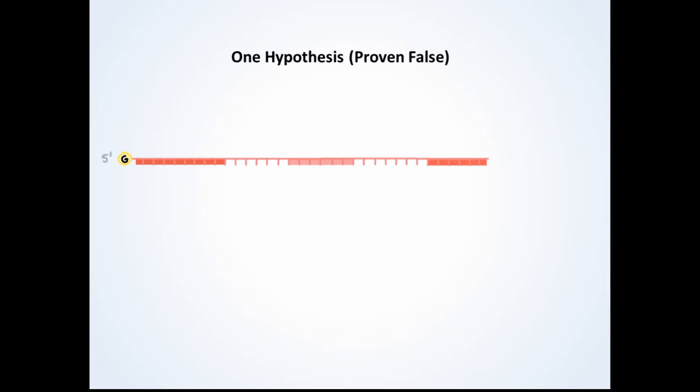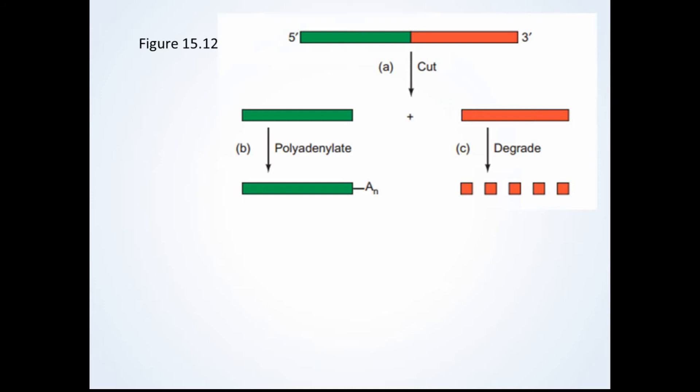One hypothesis, which was later proven incorrect, suggested that transcription terminates at the poly-A site and that polyadenylation would then occur. It is now known that the mechanism of polyadenylation usually involves clipping an mRNA precursor, even before transcription has terminated, and then adding poly-A to the newly exposed 3' end, as stated by Weaver. This is shown by figure 15.12.